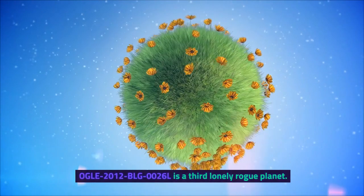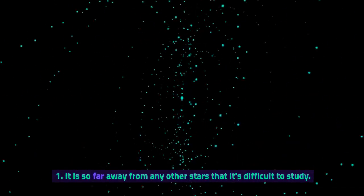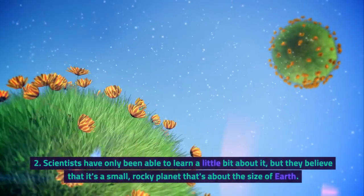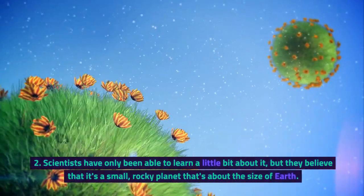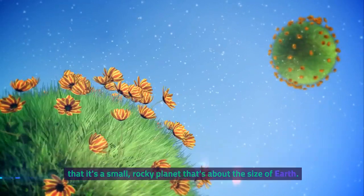Ogle 2012 BLG0026L is a third lonely rogue planet. It is so far away from any other stars that it's difficult to study. Scientists have only been able to learn a little bit about it, but they believe that it's a small, rocky planet that's about the size of Earth.